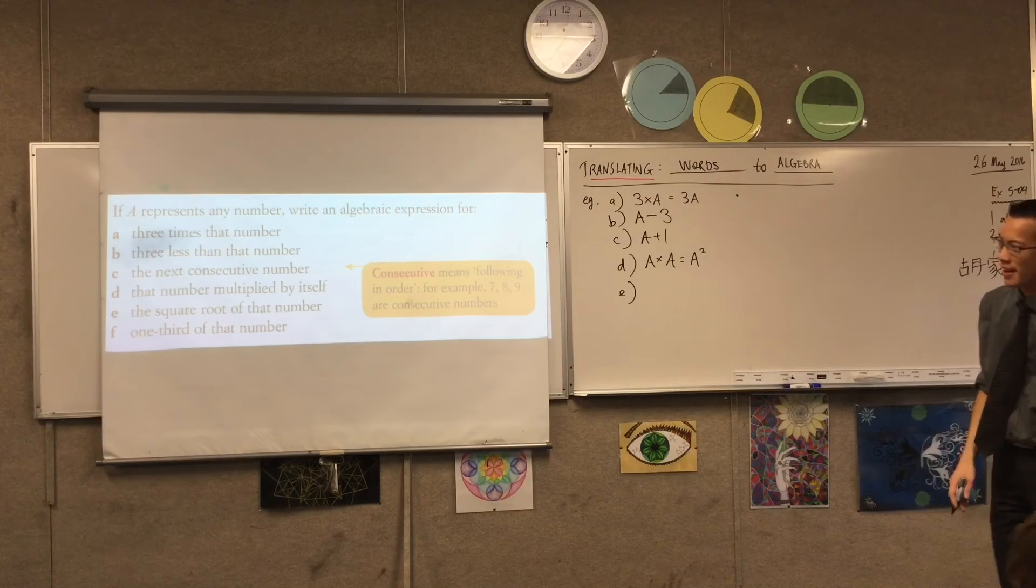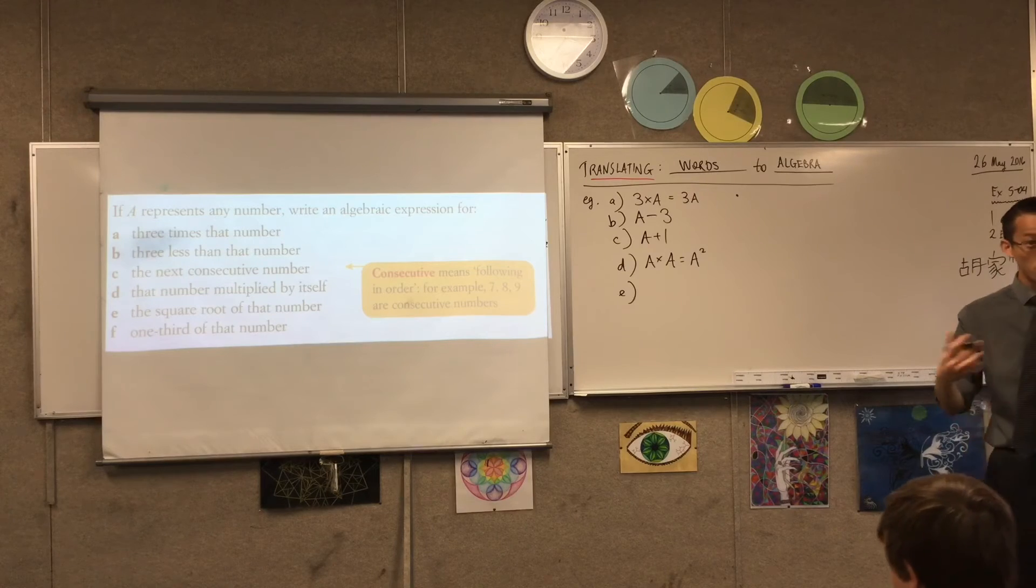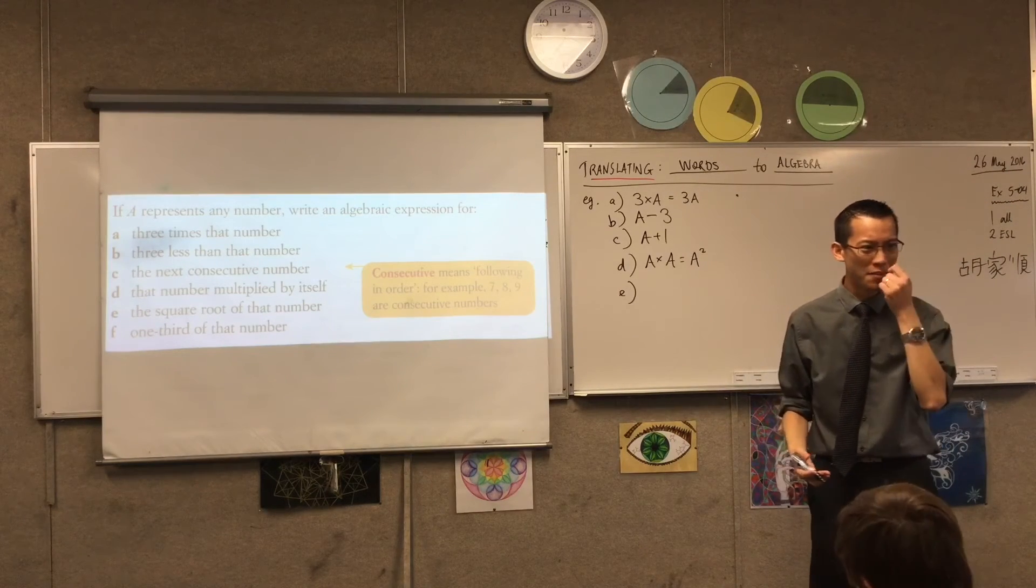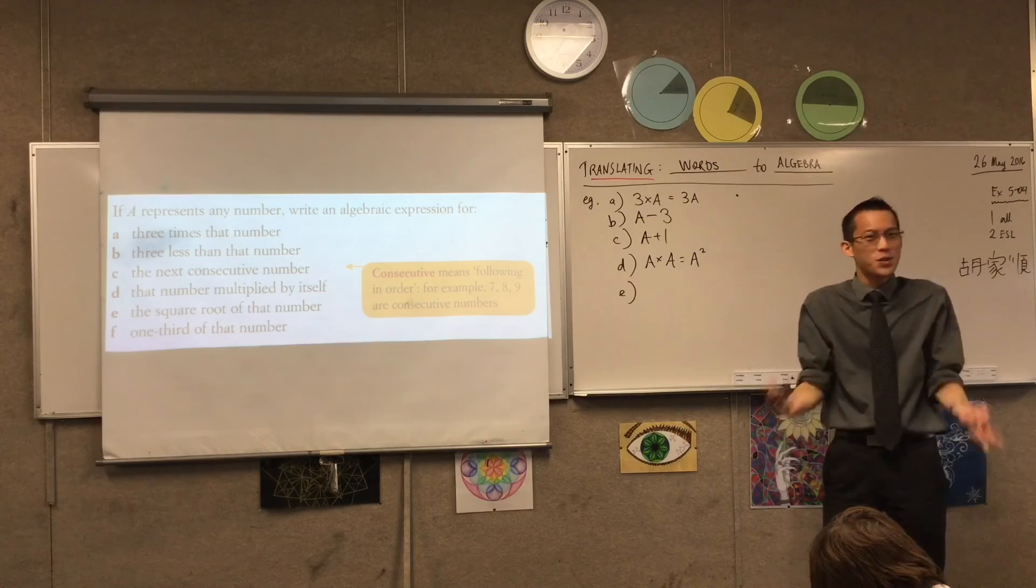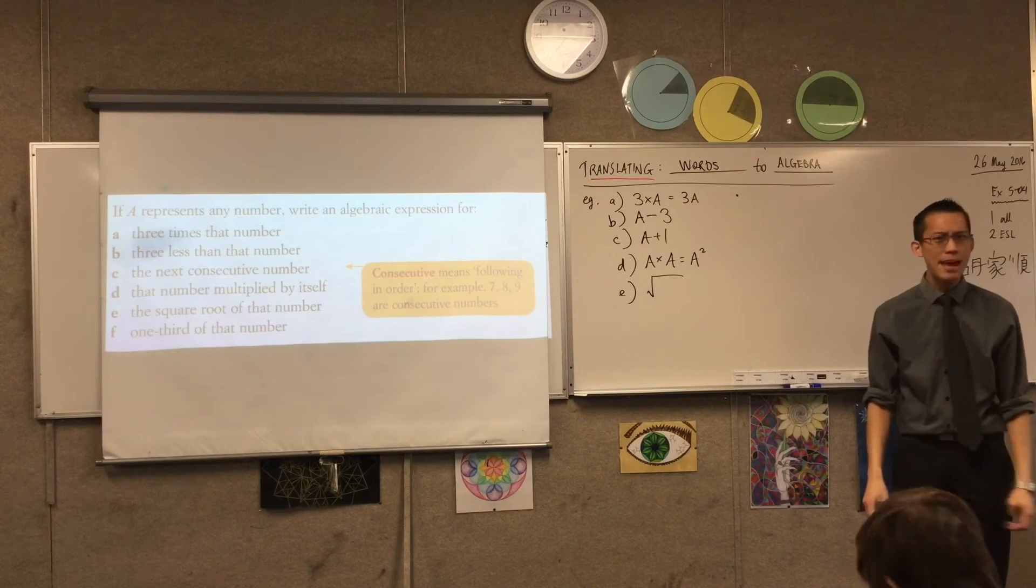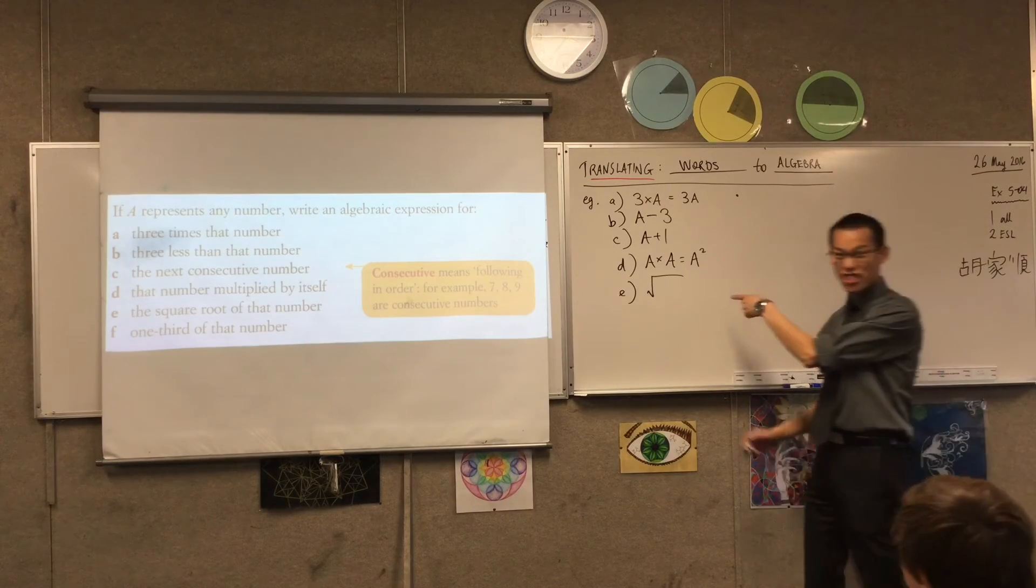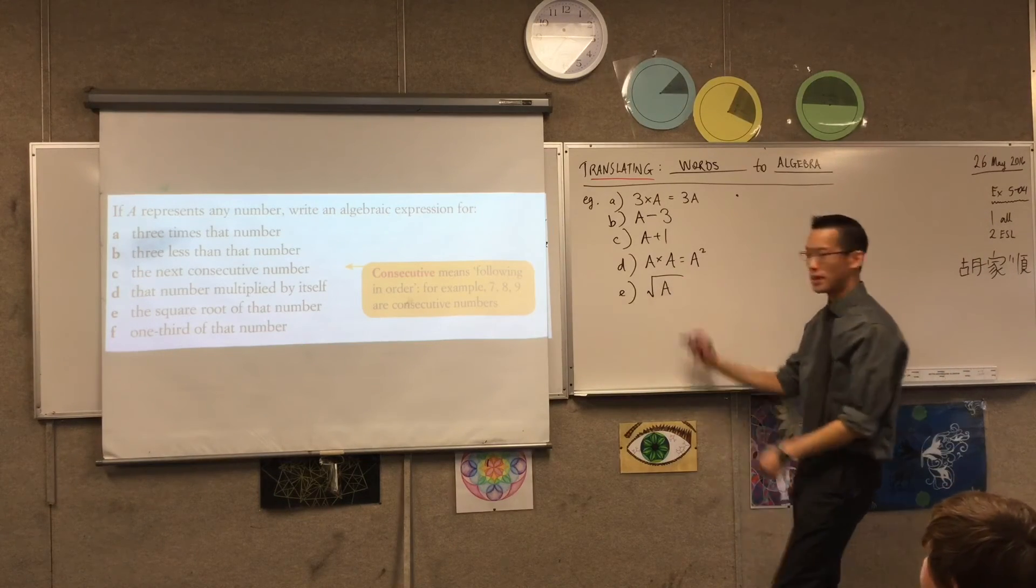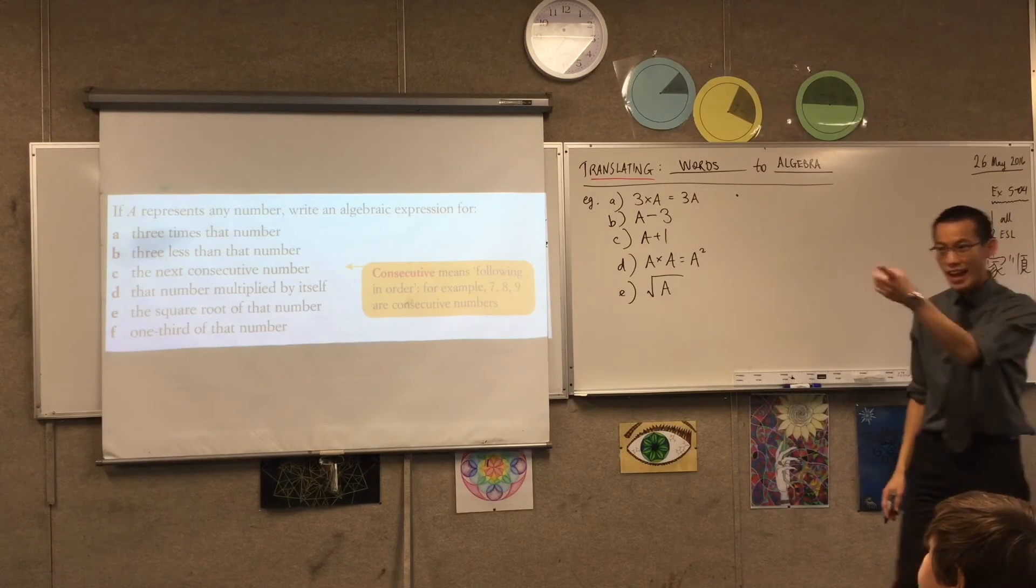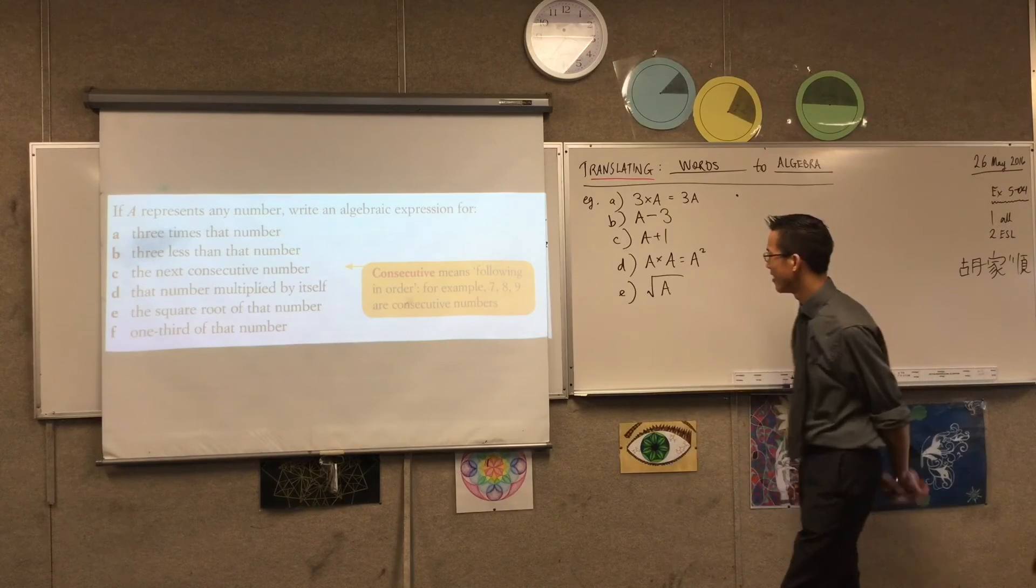Think back to when we were looking at square roots and cube roots before. The square root of that number. How do I write this? The square root symbol. Yeah. I have a whole new symbol for this, right? So that's what the square root symbol looks like. And where does the A belong? Yeah. Just underneath, right? There we go. That's the square root of my number. A. And yeah. Don't you have to call it 2?